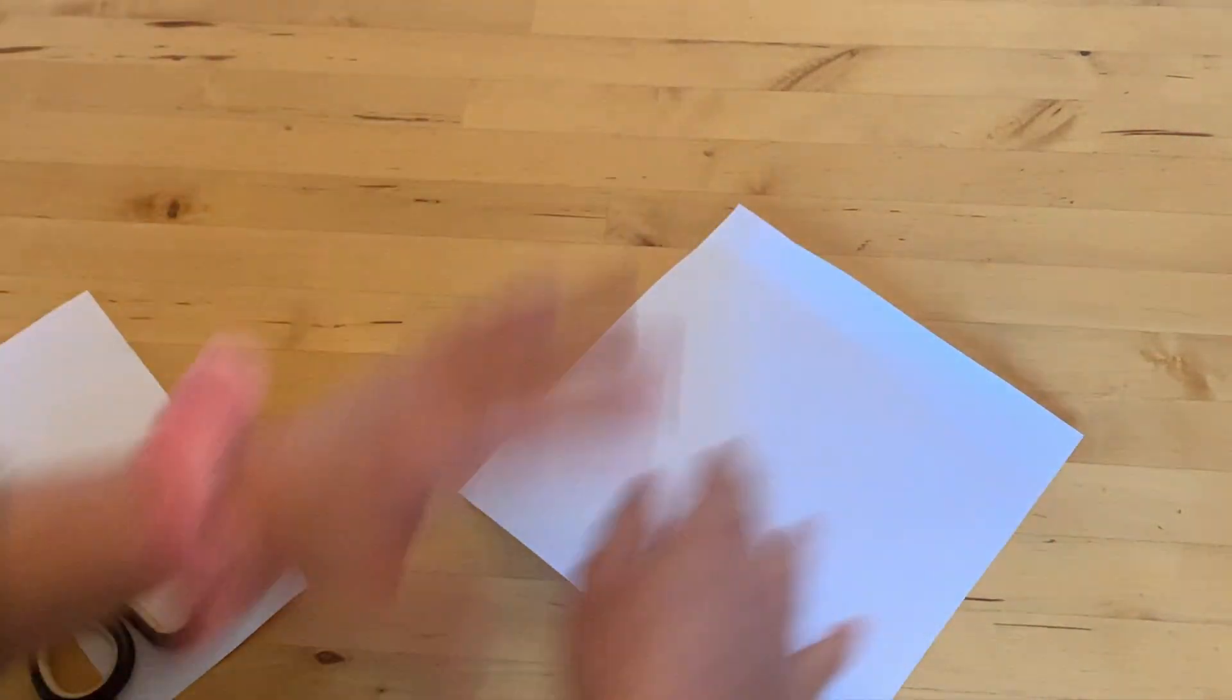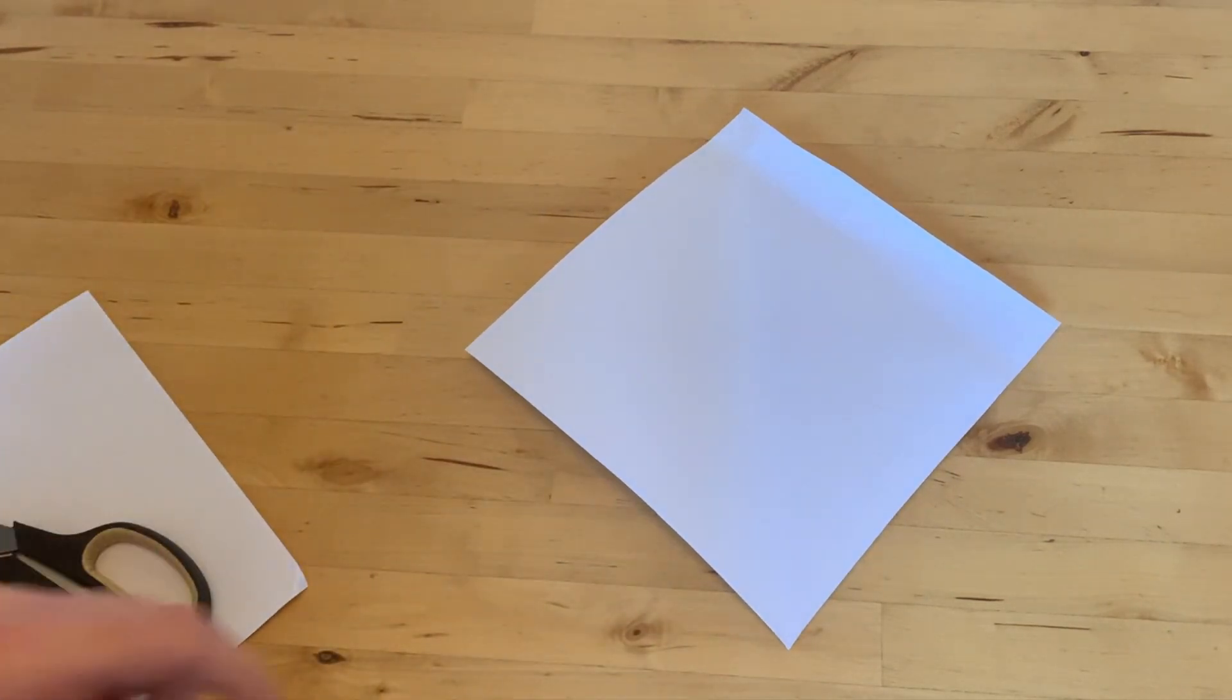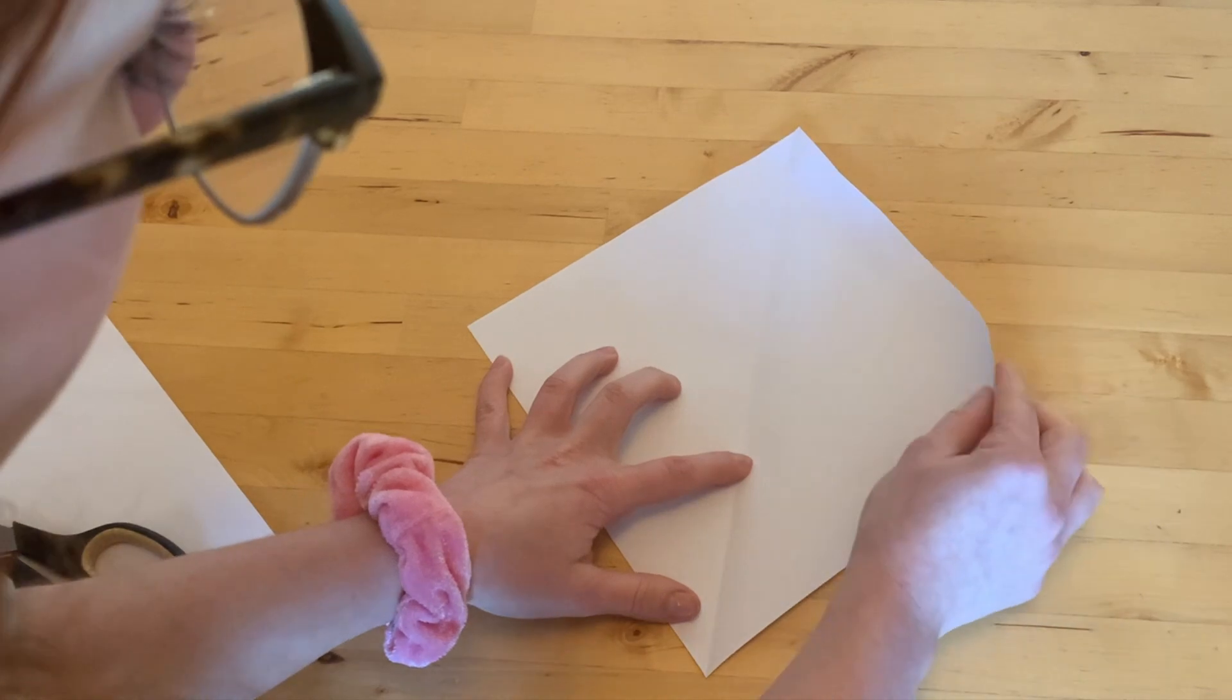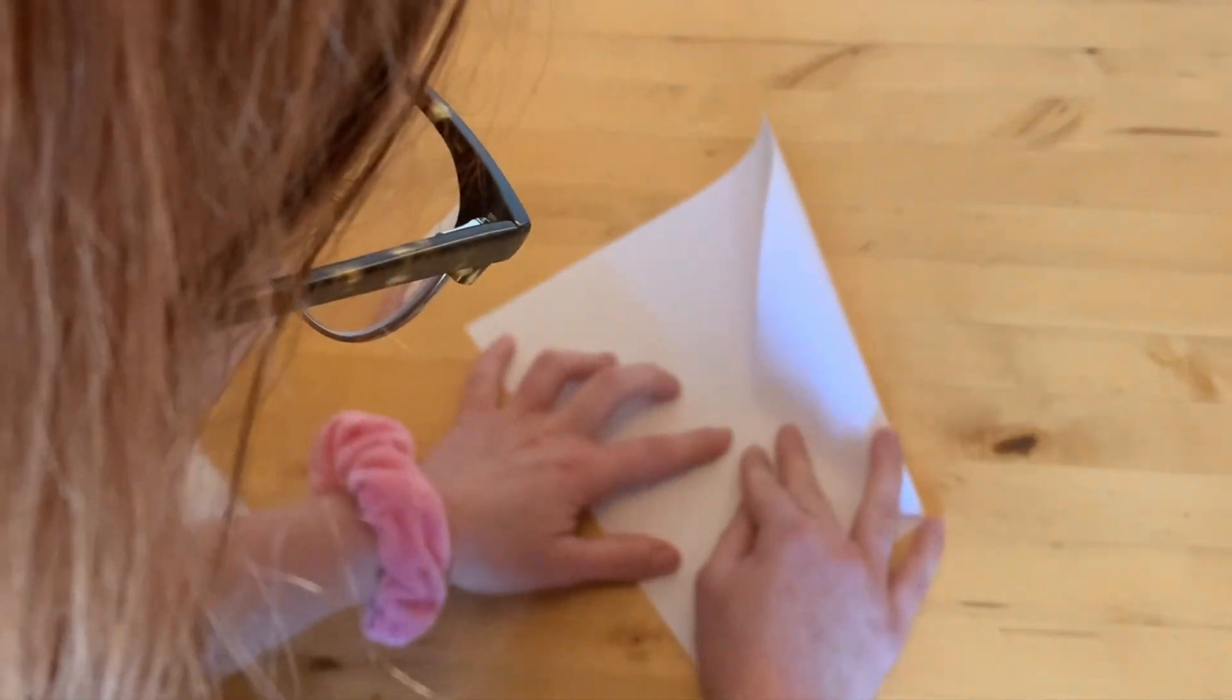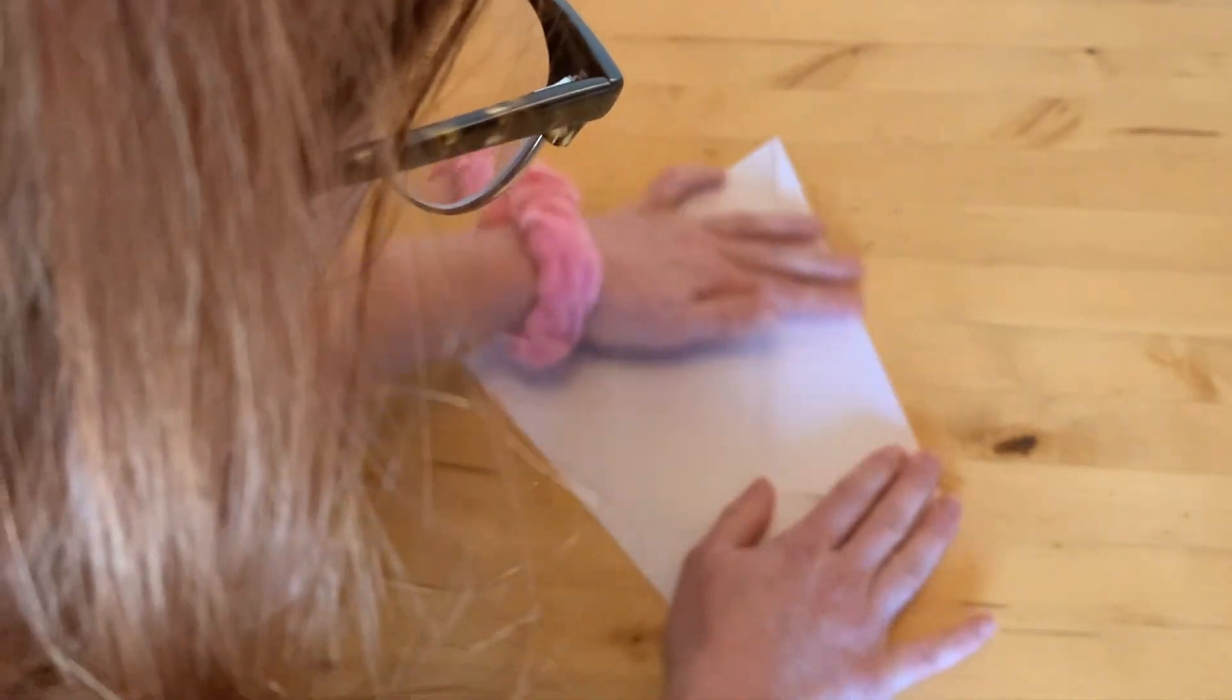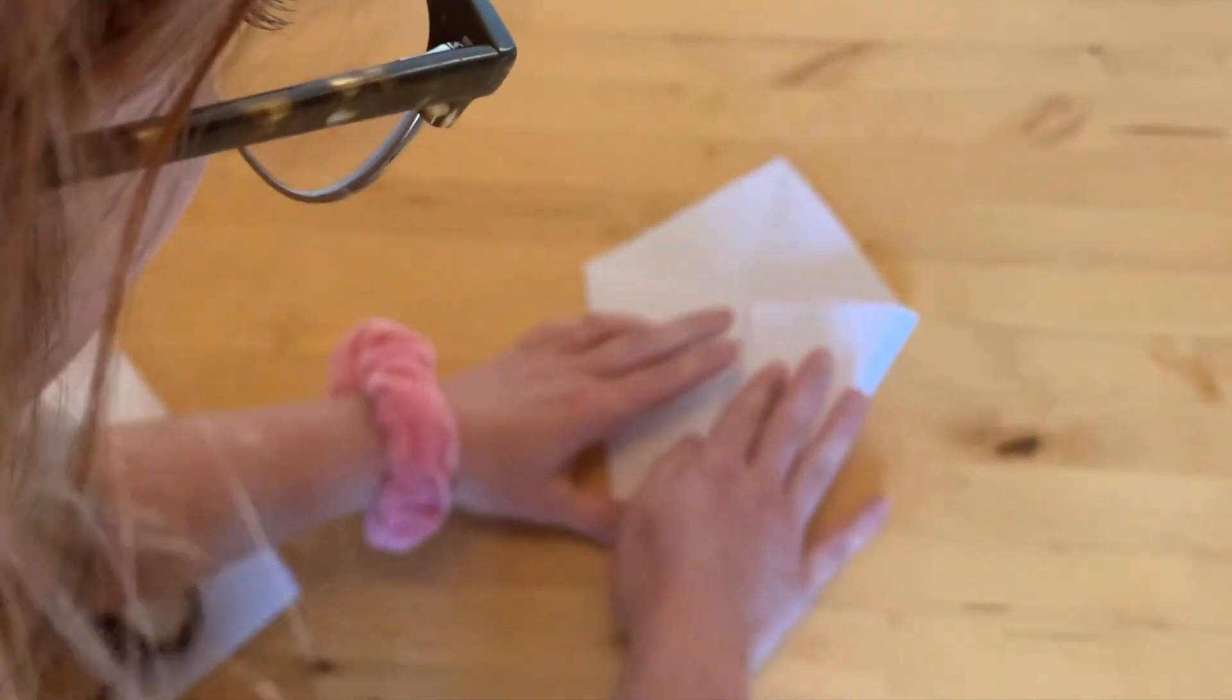With my square I want the line in the middle to be up and down the way. I'm going to use this line as a guide. I'm going to take my corners and fold them to meet this line and make sure it's a point at the top. I'm going to do this on both sides.